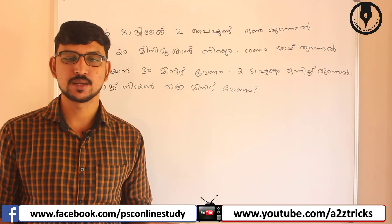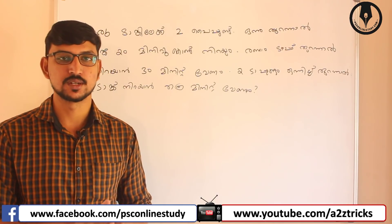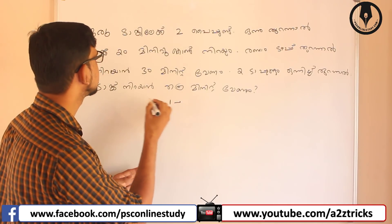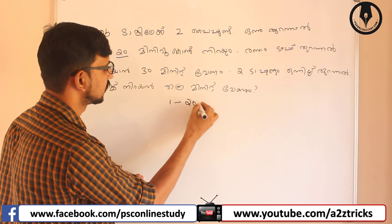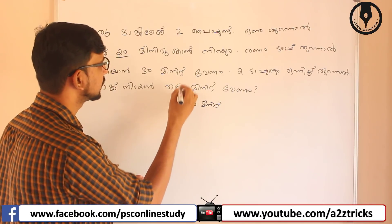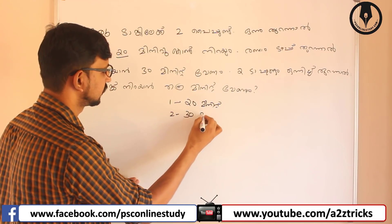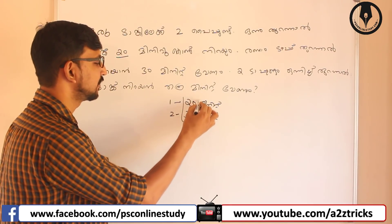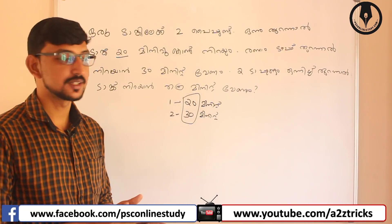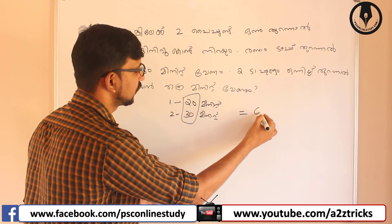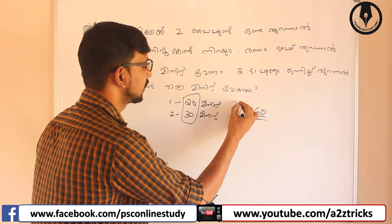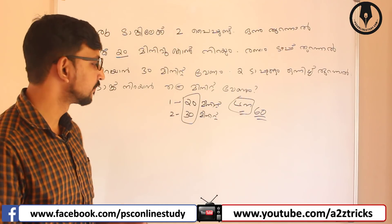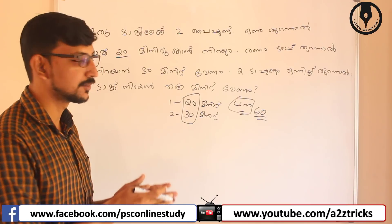Now, if you are using this type, you can use one type: LCM. You can use one equation. So if you are using this type, you can use 20 minutes. The second pipe is 30 minutes. Now we can find the LCM. The LCM of 20 and 30 is 60.